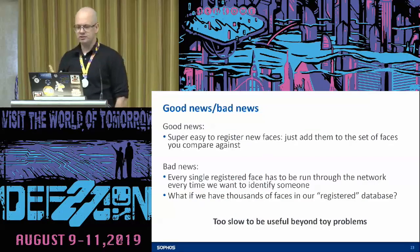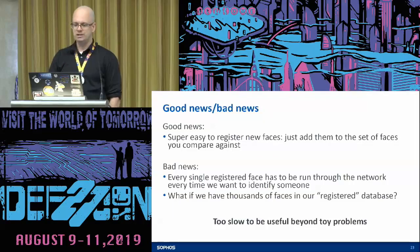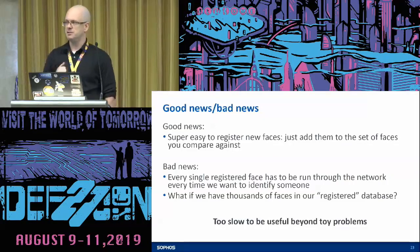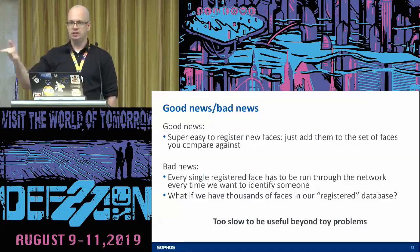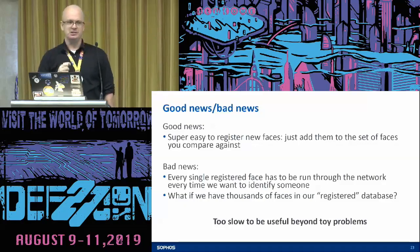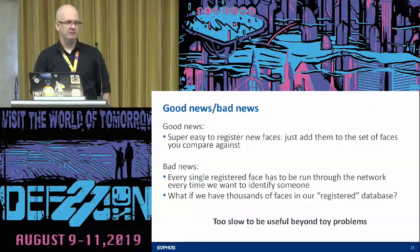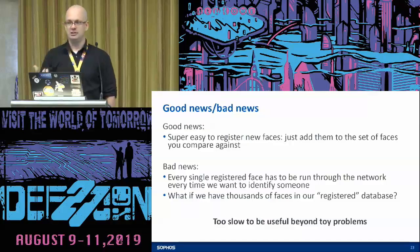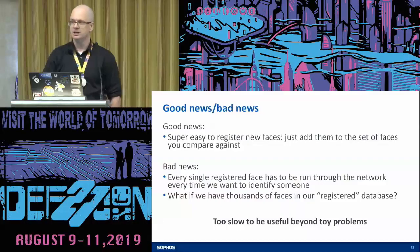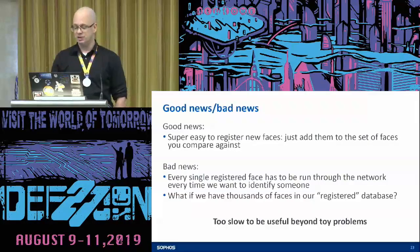Good news, bad news. Good news: it's super easy to register new faces — just get a photo and stick it in a database. Bad news: you have to run the model against every single face in your registered database. For deep learning models, this can be apocalyptically expensive. If you're trying to identify a thousand people, that's a thousand samples to run through for every face you're trying to identify. This will not scale — it works great on toy problems, but you definitely don't want to go beyond that.